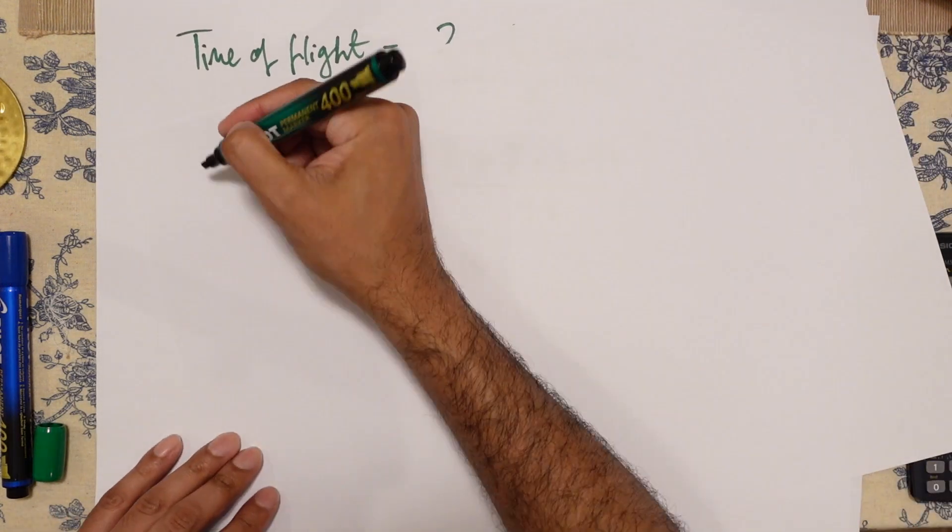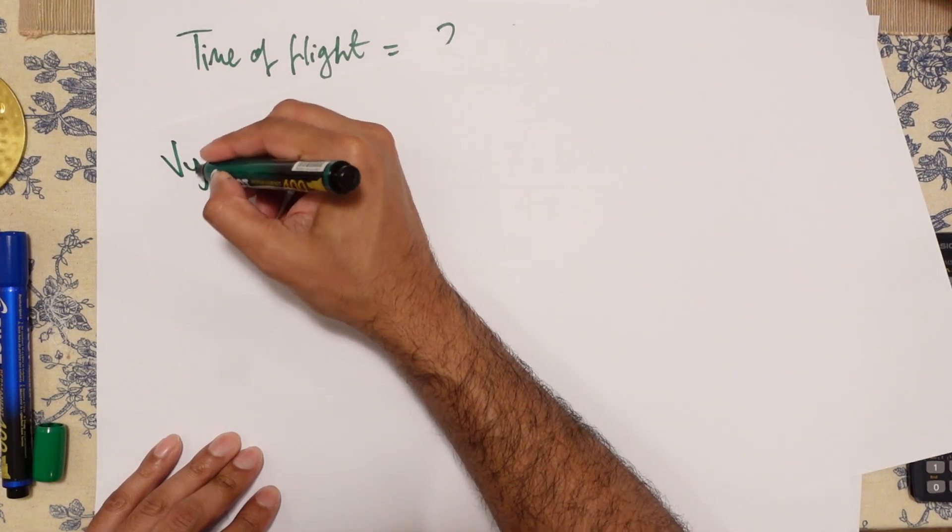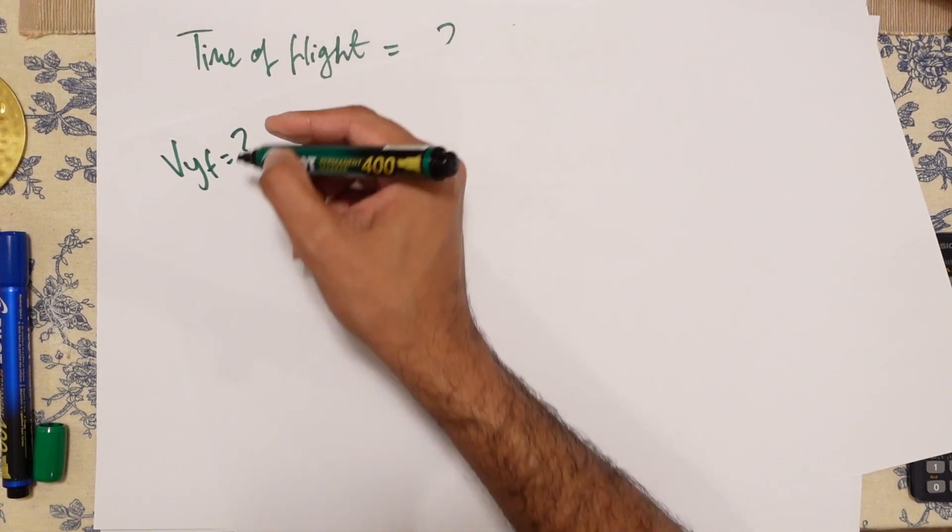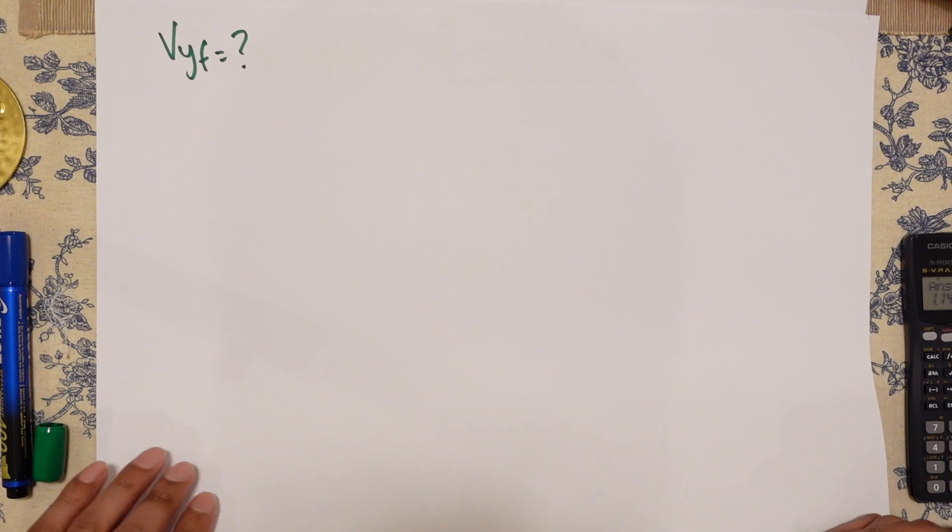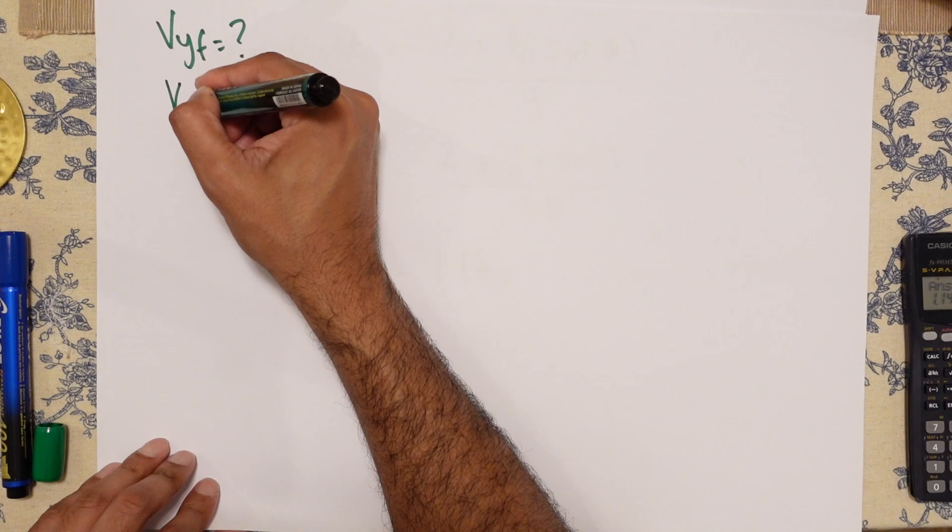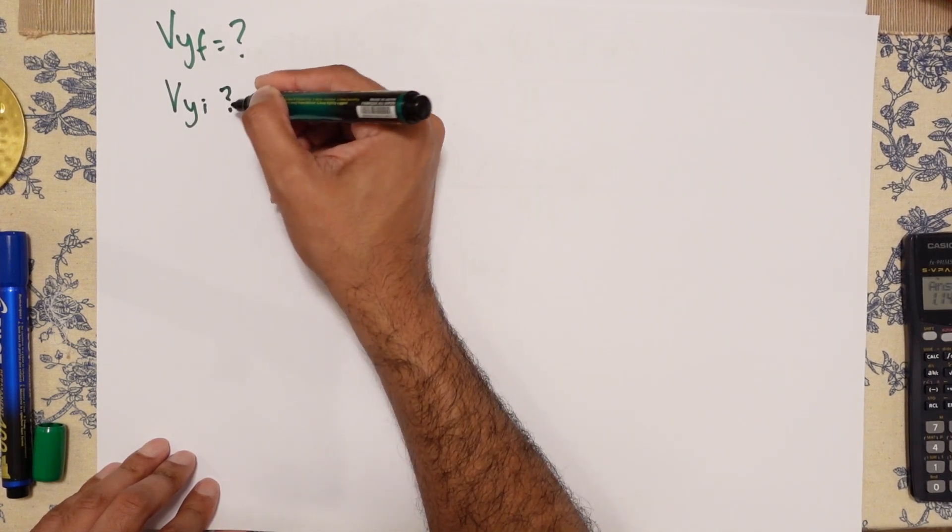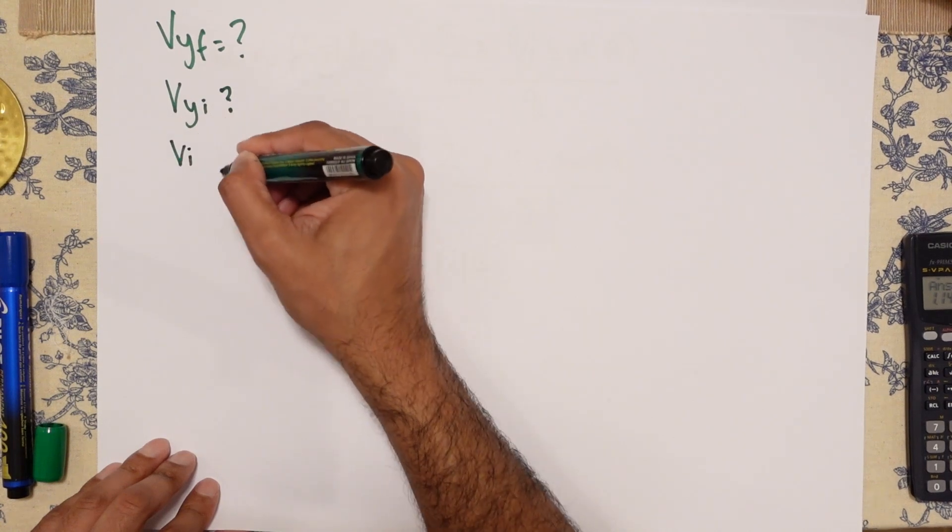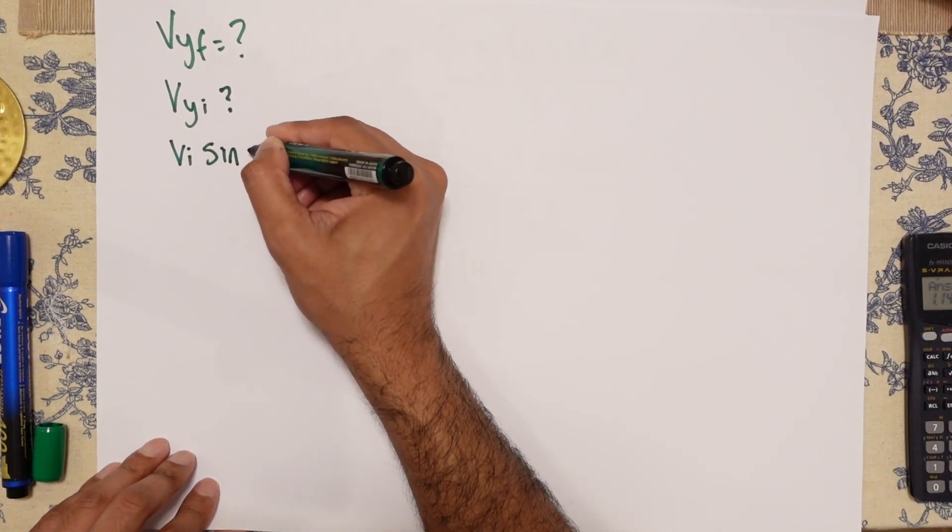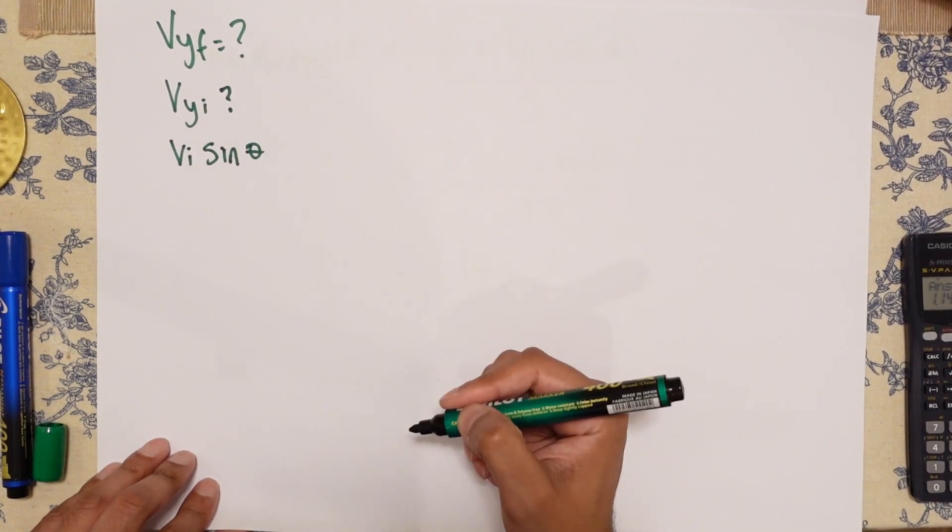So what do we know? VYF, we don't know. That's a question mark. VYI, we don't know, but we can work it out because we've got VI sine theta, which gives us that. So let's work with that.